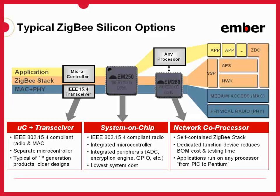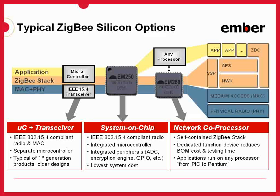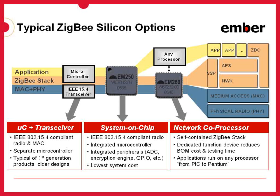The third implementation model, and the newest to emerge in the marketplace, is the Network Co-Processor, or NCP, model. In this model, an architecture similar to the SOC allows the stack and low-level radio functionality to reside on one chip for the best integration and efficiency. However, the application interface to the stack — rather than being a library of function calls — is through a serial interface such as SPI or UART. Using a proprietary serial protocol, the host microcontroller can interact with the stack, potentially abstracting these serial transactions into a library or operating system module that better accommodates the needs of the application running on the host.